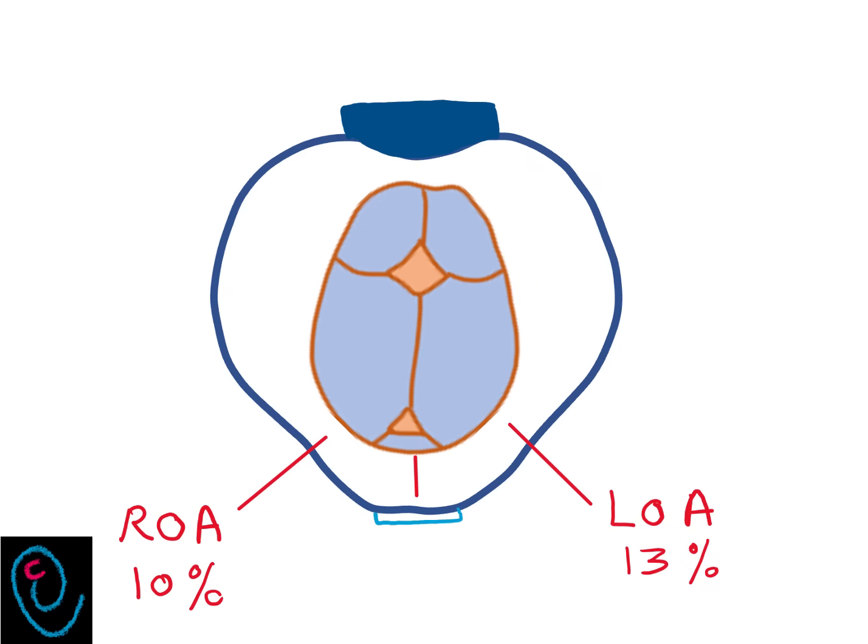And when the occiput is directly behind the symphysis pubis, it's called direct occipital anterior. These are the three anterior positions.